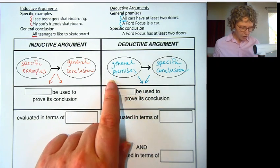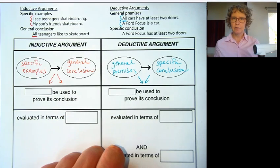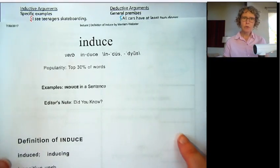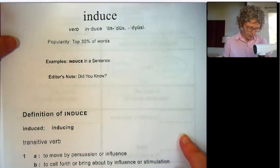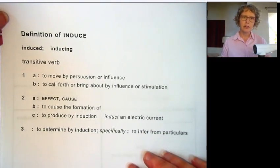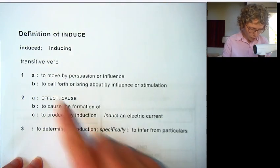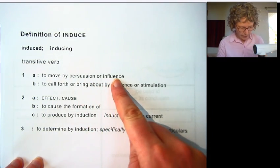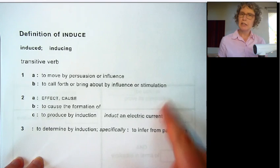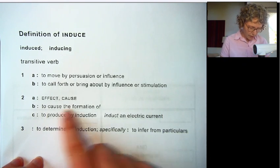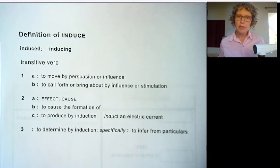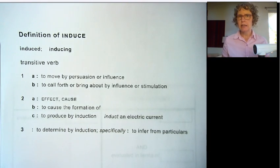Now, you might be curious what these words mean — inductive and deductive. So I looked them up online and found the verb induce, which is what inductive comes from. From Merriam-Webster dictionary online, the definition of induce is to move by persuasion or influence, to call forth or bring about by influence or stimulation, like inducing labor. So inducing is really like creating something, expanding, persuading.